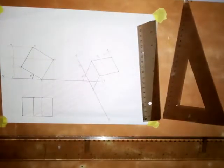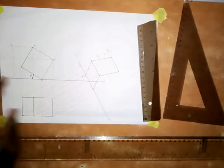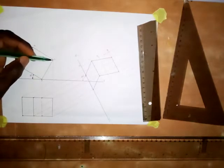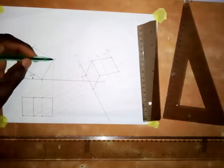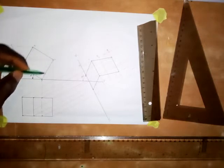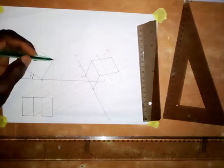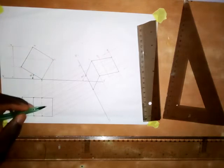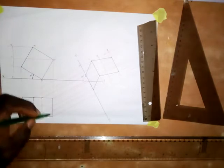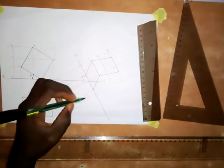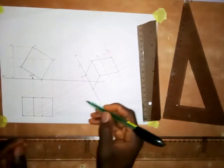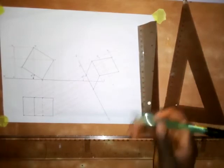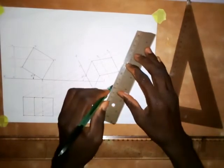Still looking at the object in this direction, point zero is being joined to two. Following line two, coming down like this — this is line two. Moving in this direction on this line, here is point two. Here is another point two. These two points will be joined together with a straight line.